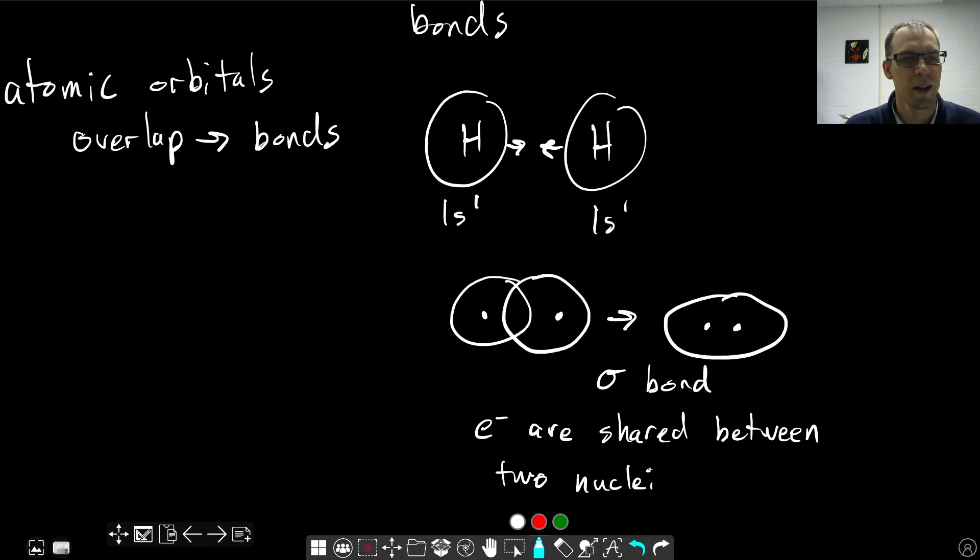Okay, and that's the basic premise of valence bond theory, is that we're going to take these individual orbitals, put them together, they're going to overlap and form bonding orbitals. And our two electrons, right, we have an electron in each here, are going to combine and be in this combined sigma bond orbital. And that's the conceptual idea here.